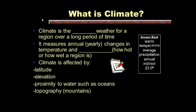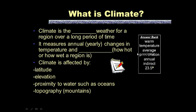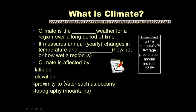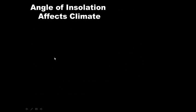For your notes, the question goes on the left-hand side and the answer on the right-hand side. Use the answer bank to determine which words best complete the sentence about what climate is. Go ahead and pause while you write. Now let's talk about how the angle of insolation affects climate — we touched on this in the wind and atmosphere unit.